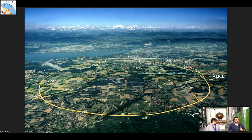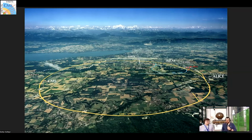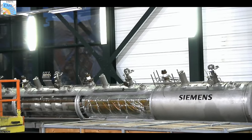LHCb is looking for matter-antimatter asymmetry and why CP is violated. ALICE is looking at heavy-ion collisions, trying to find quark-gluon plasma that is supposed to have existed in the very early universe. ATLAS, like CMS, is a multi-purpose detector. The LHC is built in a tunnel that was already used for the previous accelerator, the LEP electron-positron collider. Behind me is the radio frequency cavity for that previous accelerator — for LHC it's the same principle but bigger.